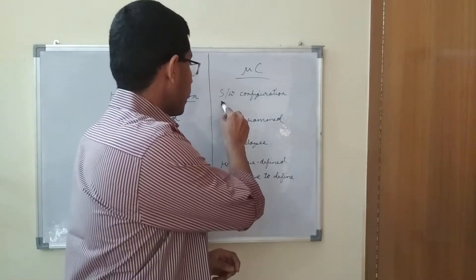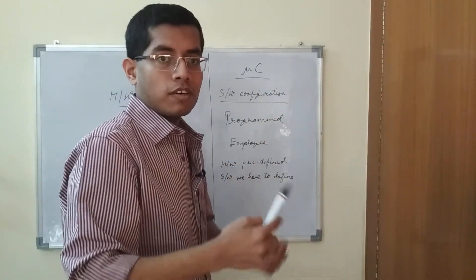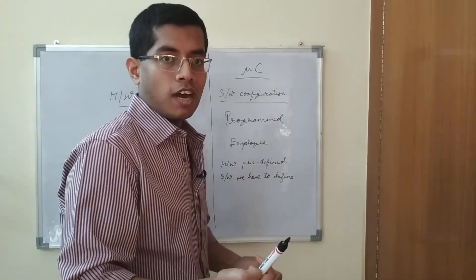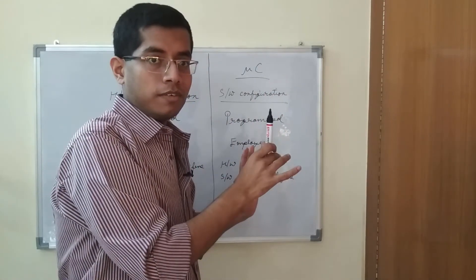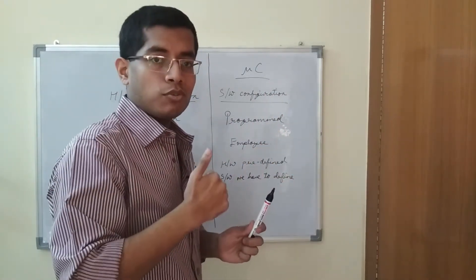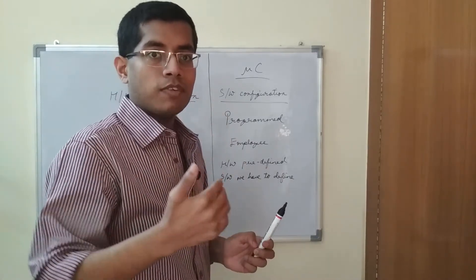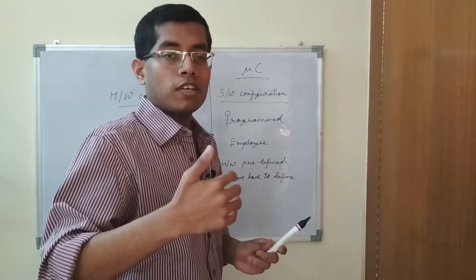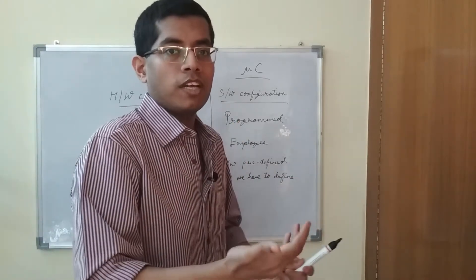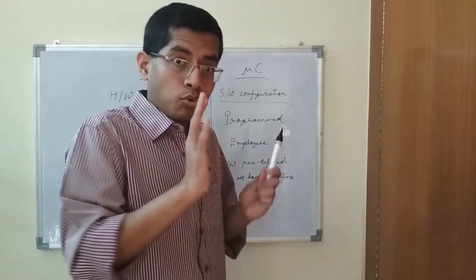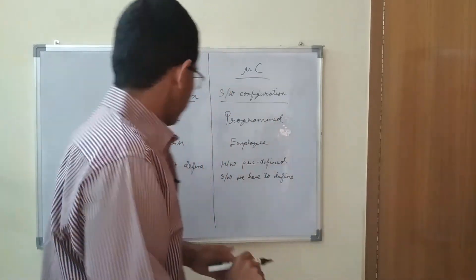Whereas a microcontroller like Arduino, 8051, or ARM — all of them have predefined hardware. The only thing we have to do is configure the software. We have to program it and tell it what it has to do. It knows how to do things, but we have to tell it what to do.